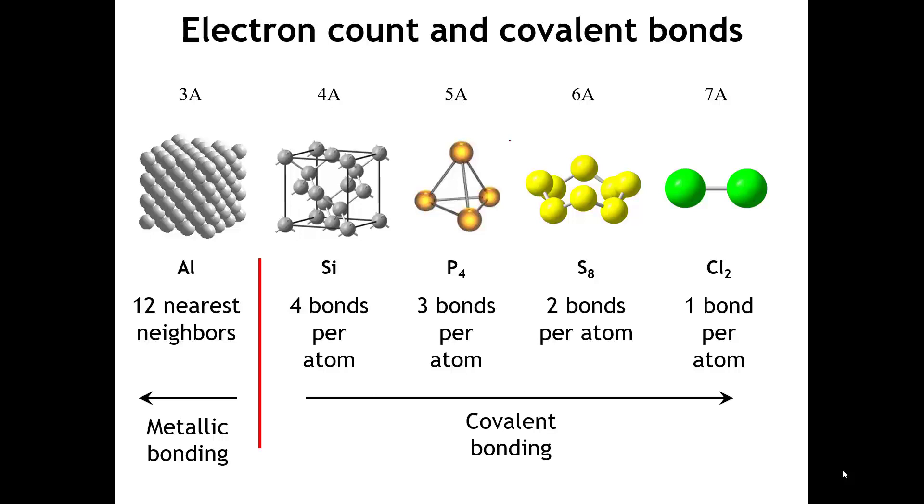If we move over to group 6A, we've got sulfur. There are two electrons shy of an octet, so each sulfur atom has to make two bonds.